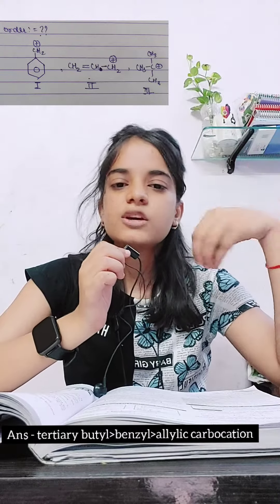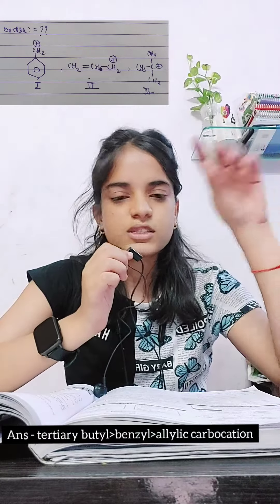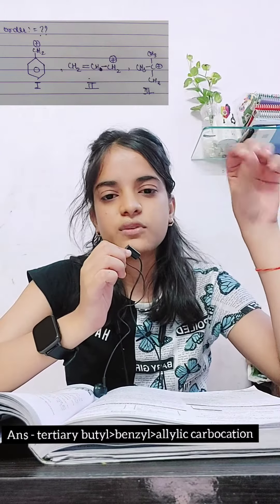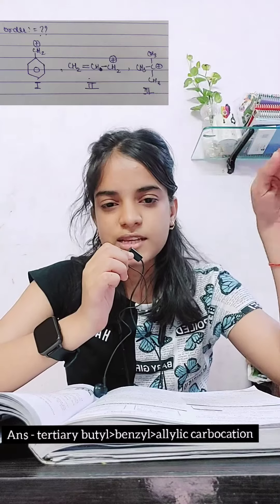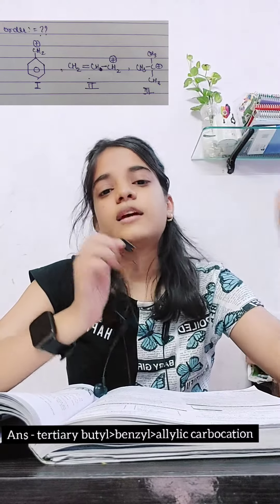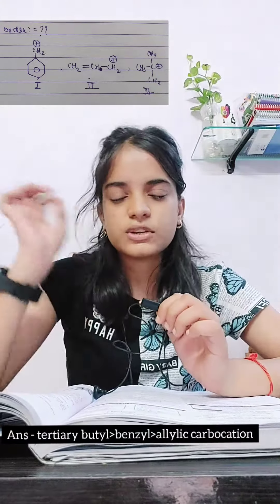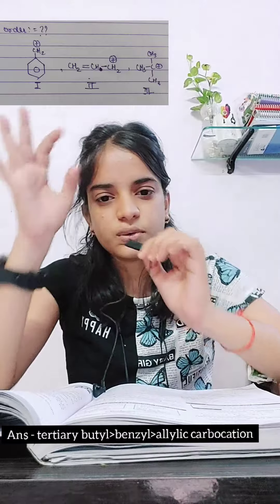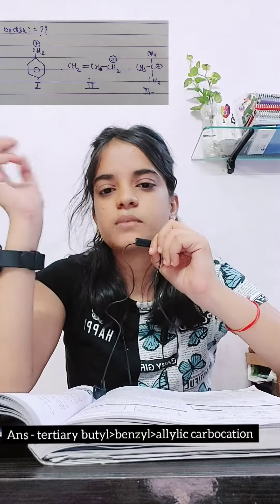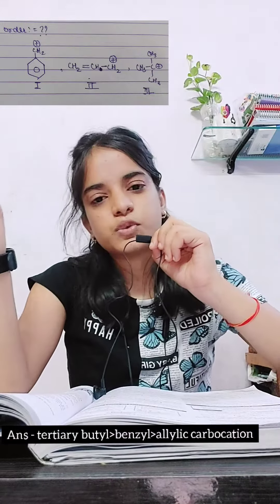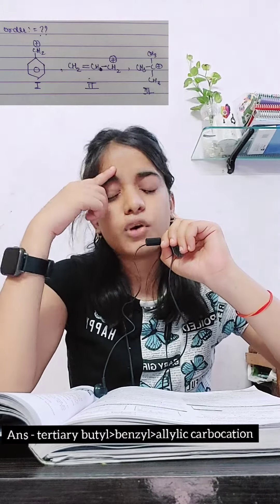So the correct stability order for that question is: tertiary > benzylic > allylic. Benzylic vs allylic is straightforward — benzylic has more resonating structures, so it is more stable than allylic. There are many different answers online, but this is the correct order.